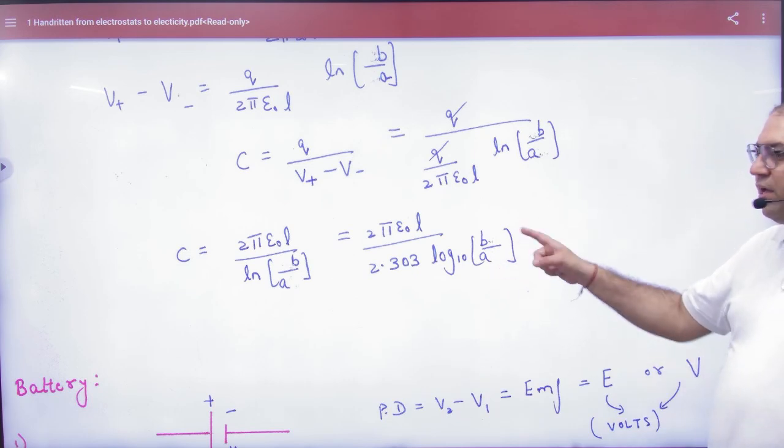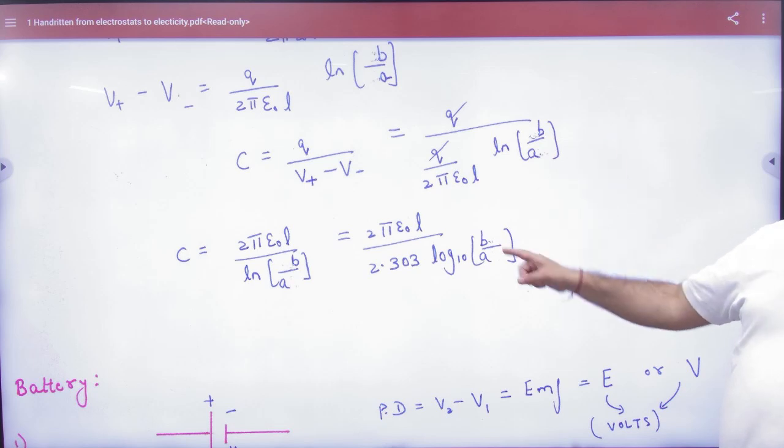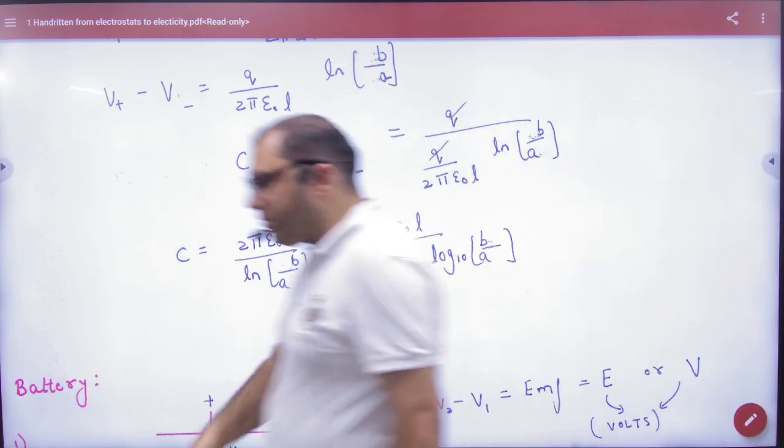So, note the formula. Cylindrical capacitor: A for inner radius, B for outer radius, and L for length of the cylinder. Please note the formula.